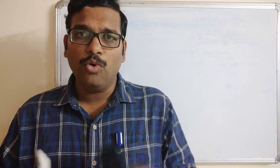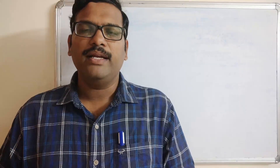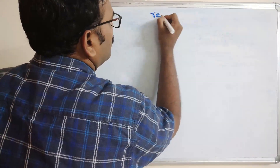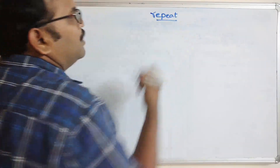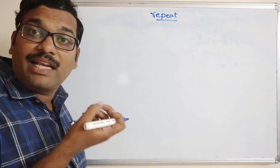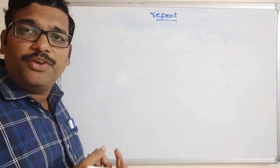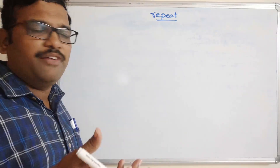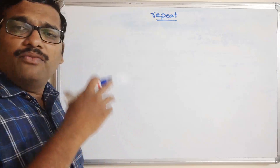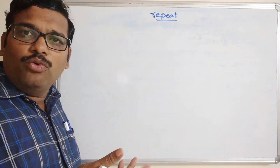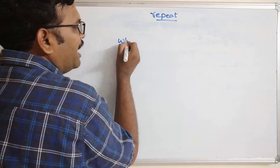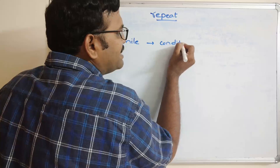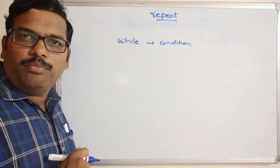Now we will see one more iterative statement — repeat. The name itself indicates that the repeat statement will execute a set of instructions multiple times. What is the difference between repeat and the for loop or while loop? In the while loop, we write a condition, and based upon the result of that condition we terminate the loop.